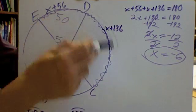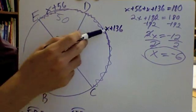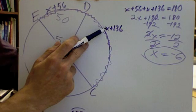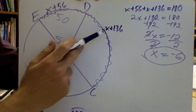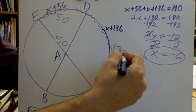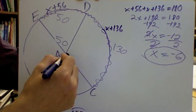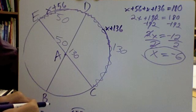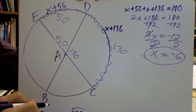I also know arc DC was X plus 136. Now I know that X is negative 6. So I'm going to plug it in right there. This will say negative 6 plus 136. Well, that's 130. And I know the arc is the same as the central angle. So this is also 130.